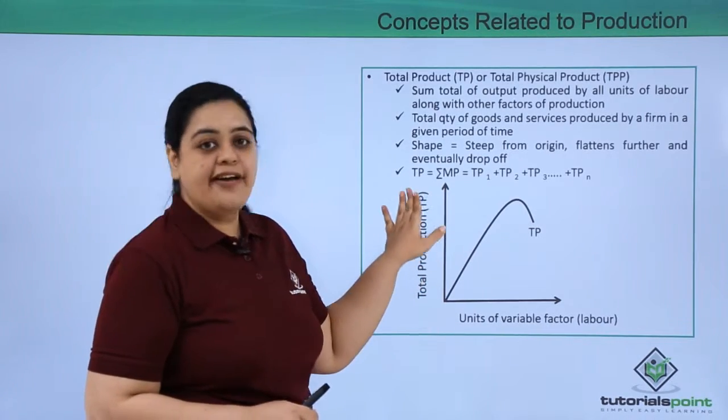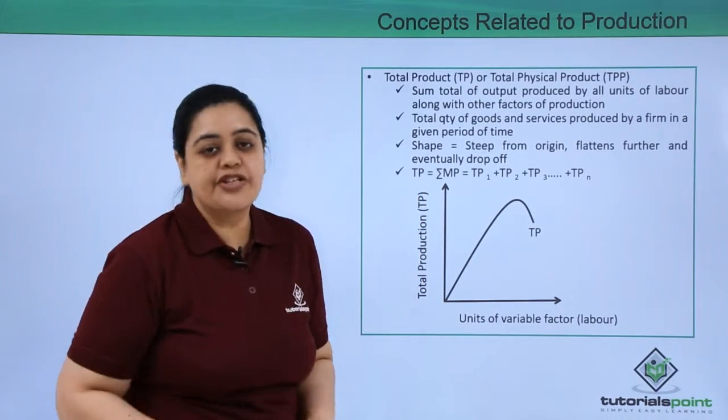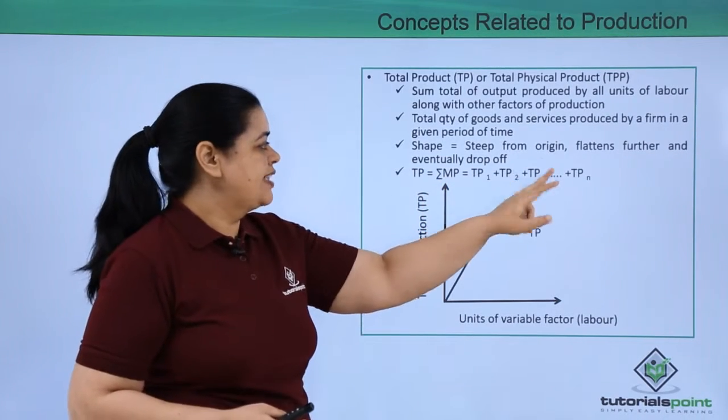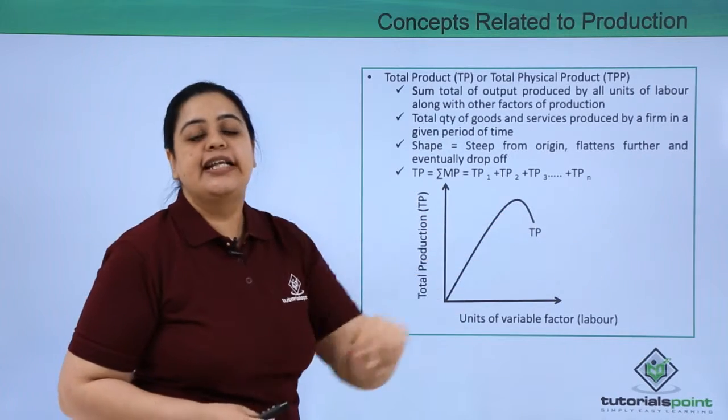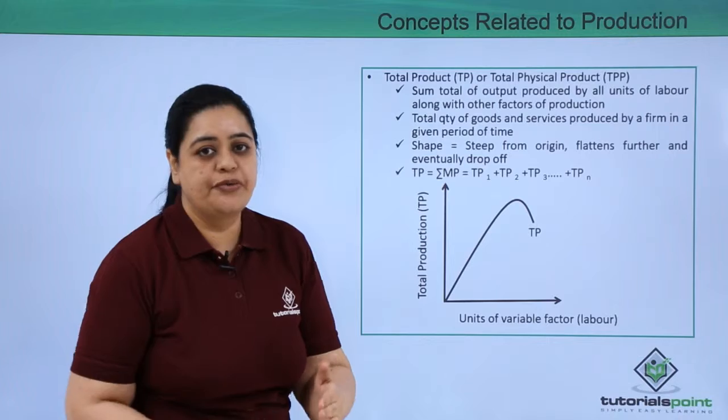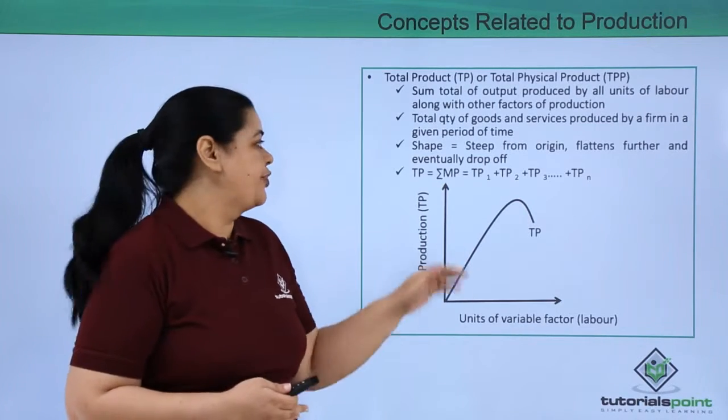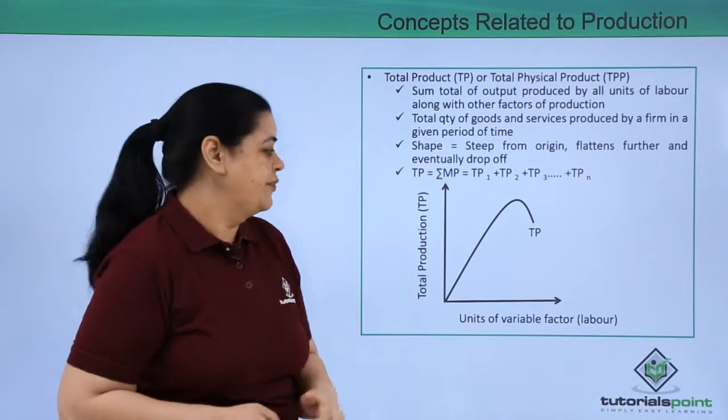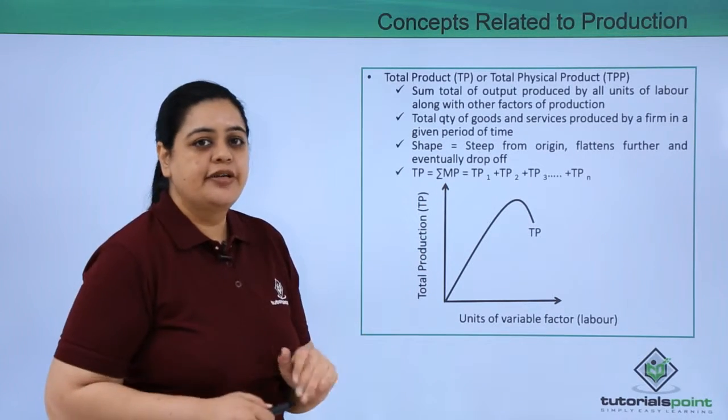If I have to give you an equation of the total product, it is nothing but TP1 plus TP2 plus TP3 till TPN. N would be the number of units which have been produced. Also, this is the summation of MP, that is marginal product.